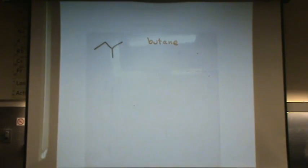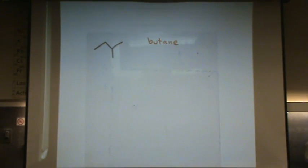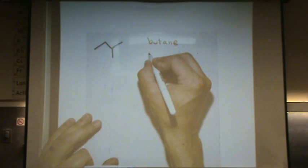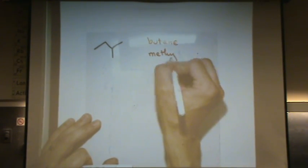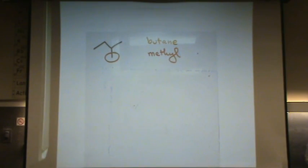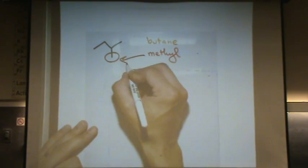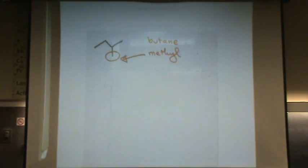Now identify all our branches. That's our second step. What branch do we have? A methyl, because it has one carbon. So that's a methyl. There's only one carbon on it.